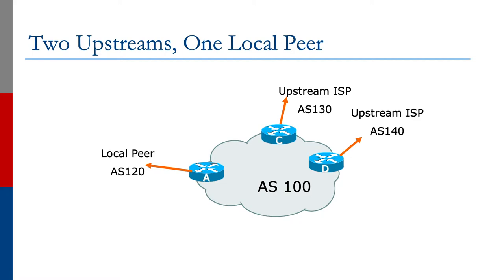It's the whole redundancy question again. If we connected two upstreams to the same router and we lost that router, we lose both upstreams. So the minimum number of routers required in this example is three.